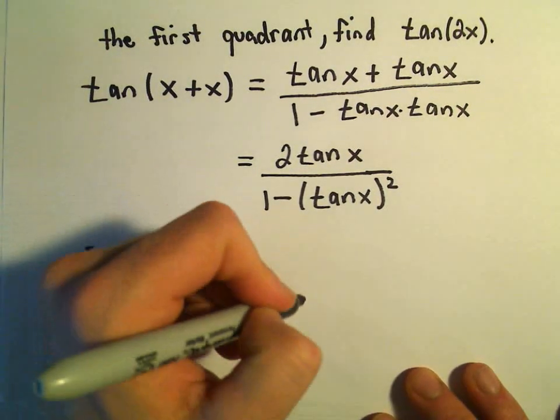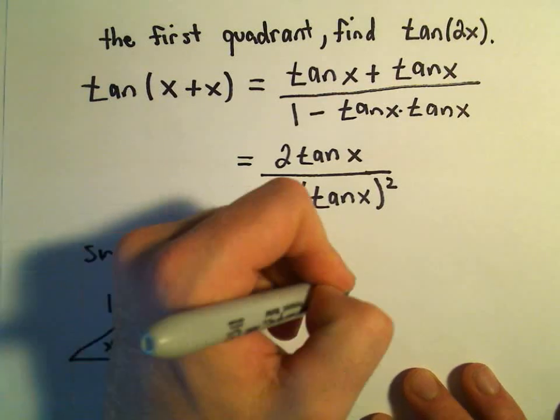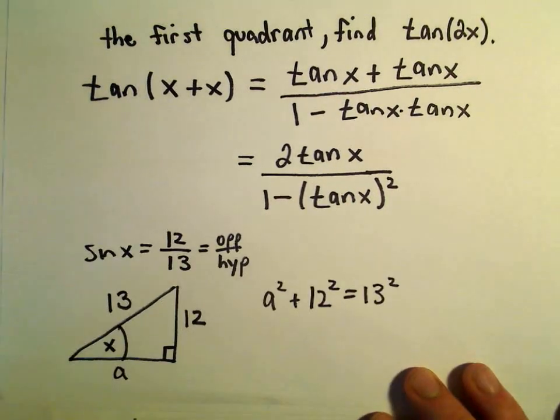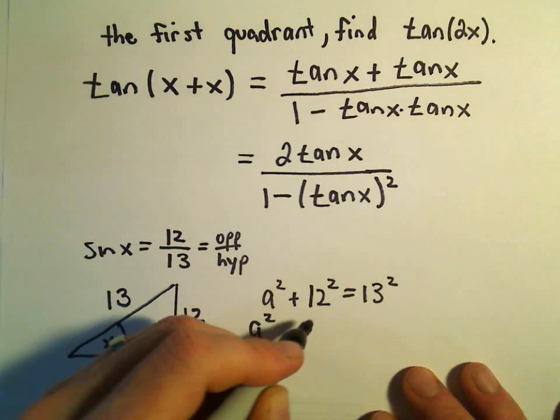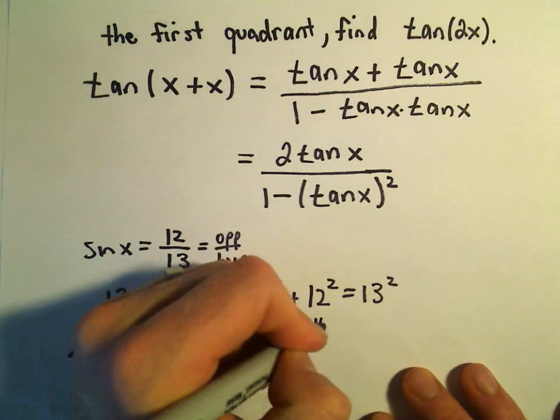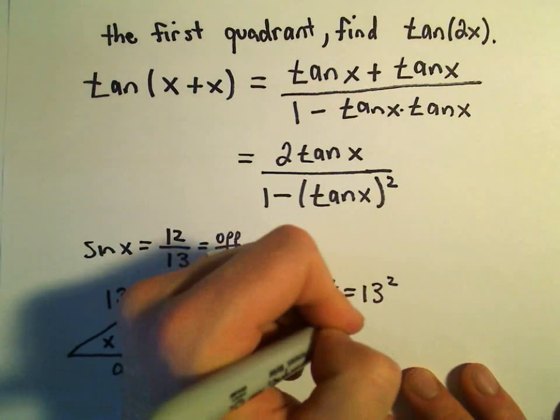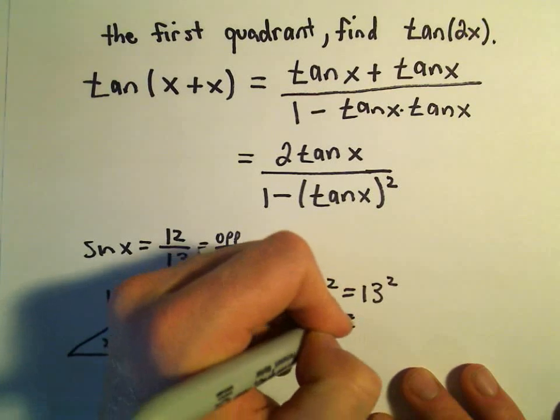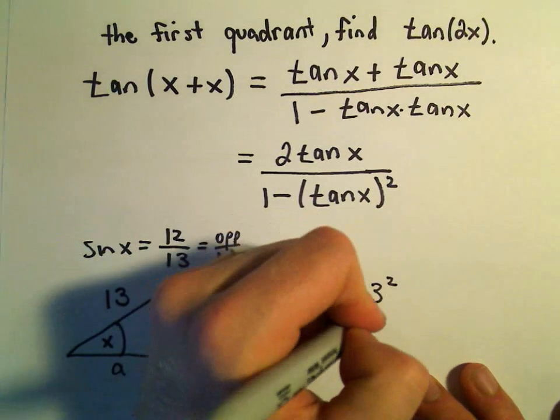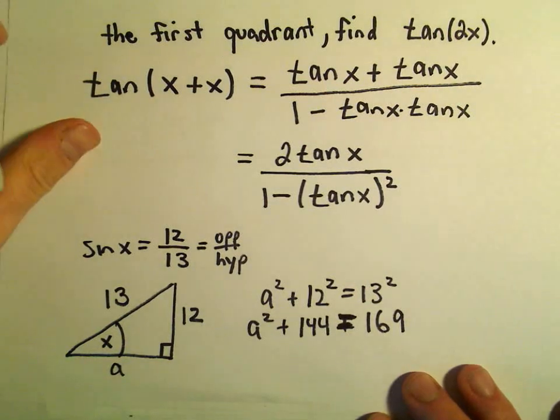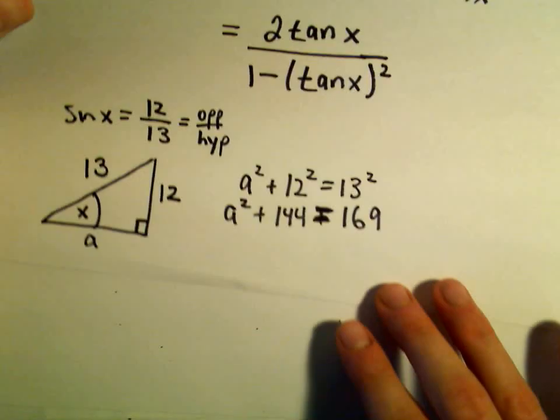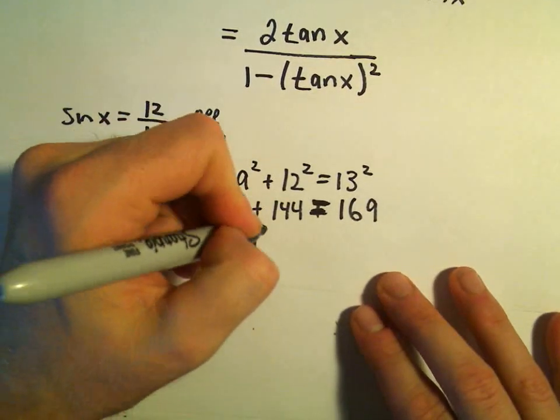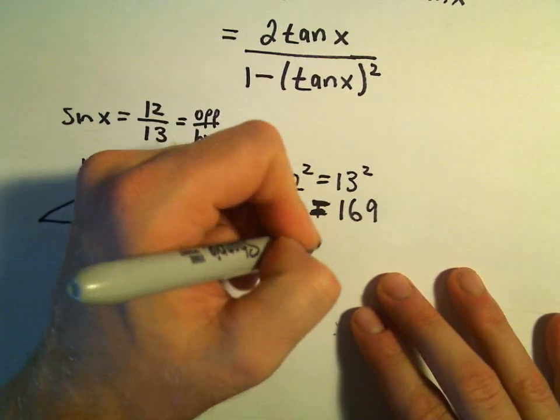So A squared plus 12 squared would equal 13 squared. 12 times 12 is 144. 13 times 13 - whoops, I wrote a plus, that should just be an equal sign - 13 times 13 is 169. If we subtract 144 from both sides, we'll get A squared equals 25.